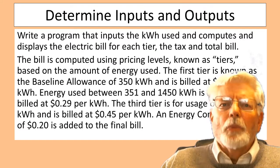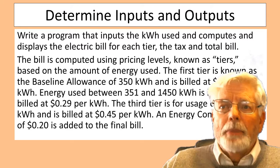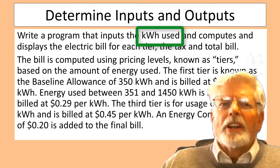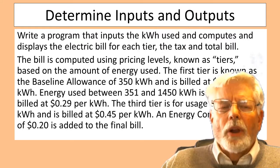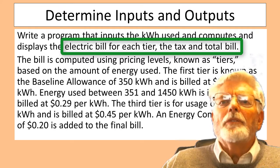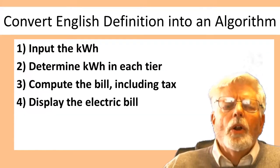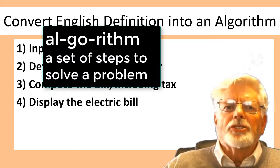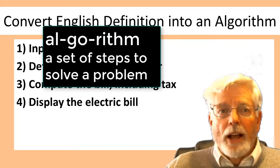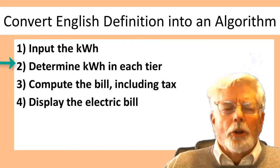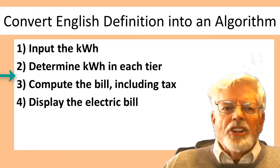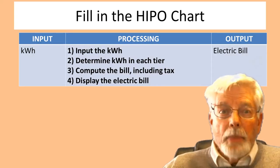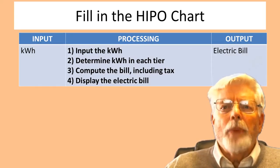The project may seem complicated until we break it down into smaller pieces. Let's start by identifying the inputs and outputs. The only input is kilowatt hours used. The only output is the electric bill showing the amount for each tier, tax, and total. We can simplify the project definition into an algorithm — a set of steps to solve a problem: (1) input the kilowatt hours, (2) determine kilowatt hours in each tier, (3) compute the bill including tax, (4) display the electric bill. We can place these into a HIPO chart — Hierarchical Input Process Output.